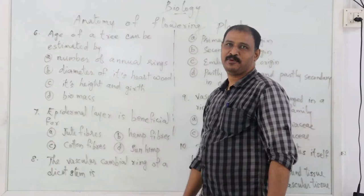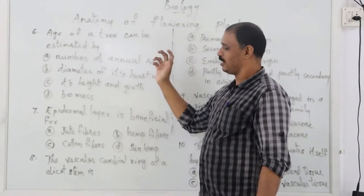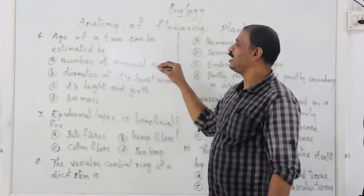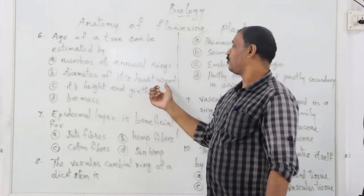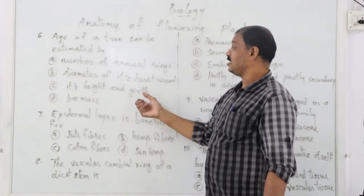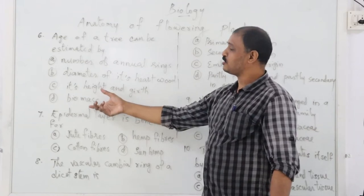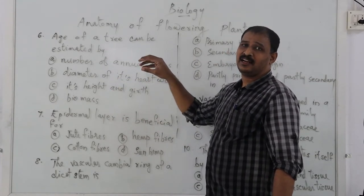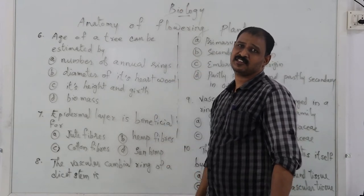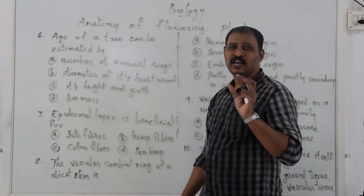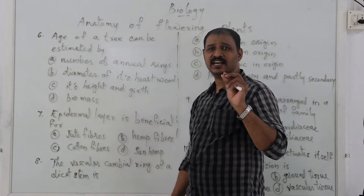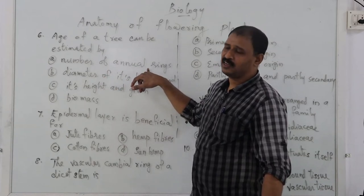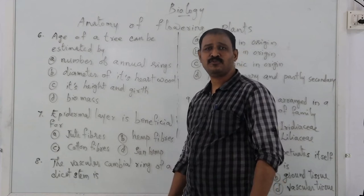Next question: the age of a tree can be estimated by — option A: number of annual rings, option B: diameter of its heartwood, option C: its height and girth, option D: biomass. The growth of a plant throughout a year shows two concentric rings — one light and low-density ring and one dark and high-density ring — which together constitute an annual ring.